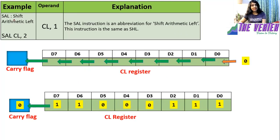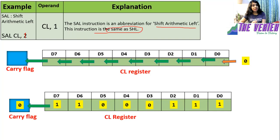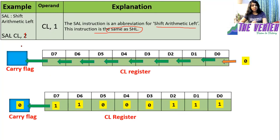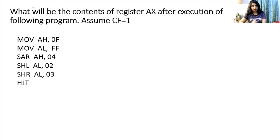The next instruction is SAL — Shift Arithmetic Left. The instruction is SAL CL, 2. SAL is an abbreviation for shift arithmetic left, and this instruction is the same as SHL. Whatever we saw for SHL applies the same to SAL. Every bit will shift towards left by one bit position and zero will enter from the right-hand side.